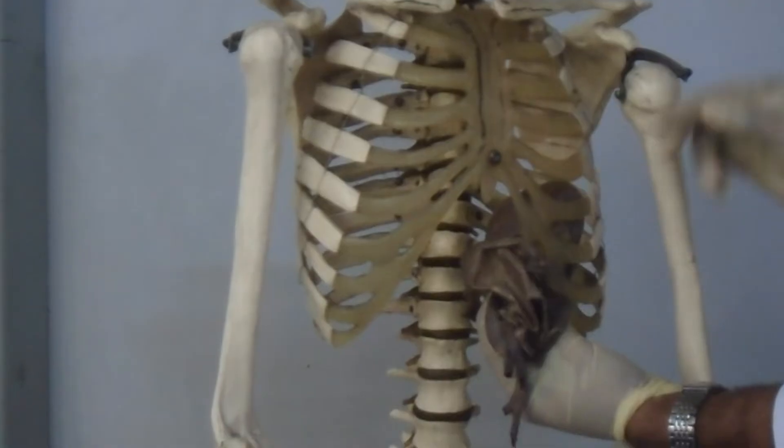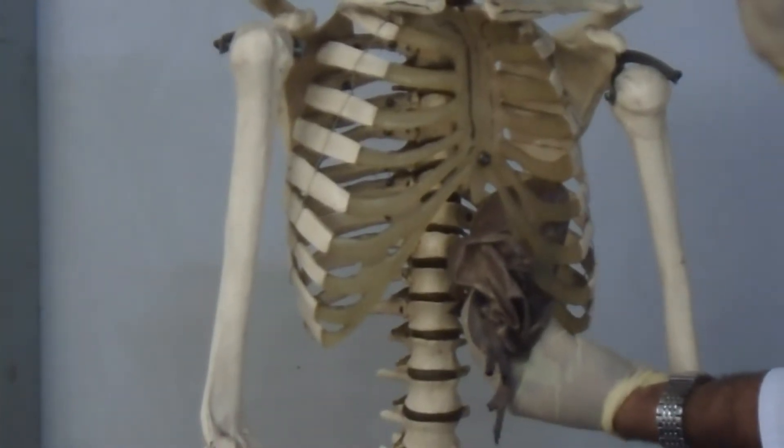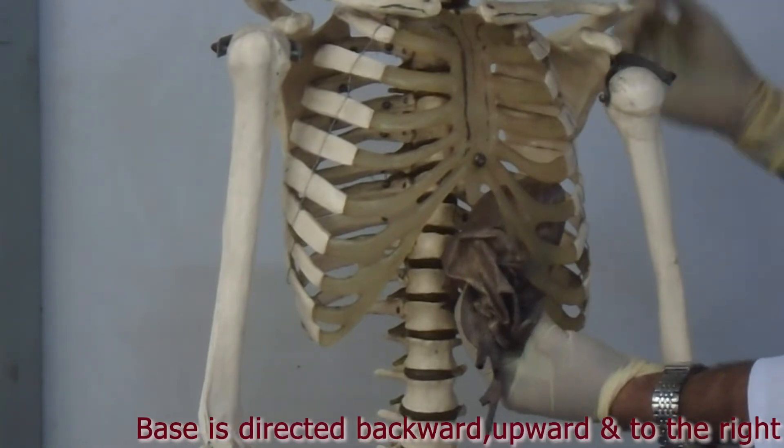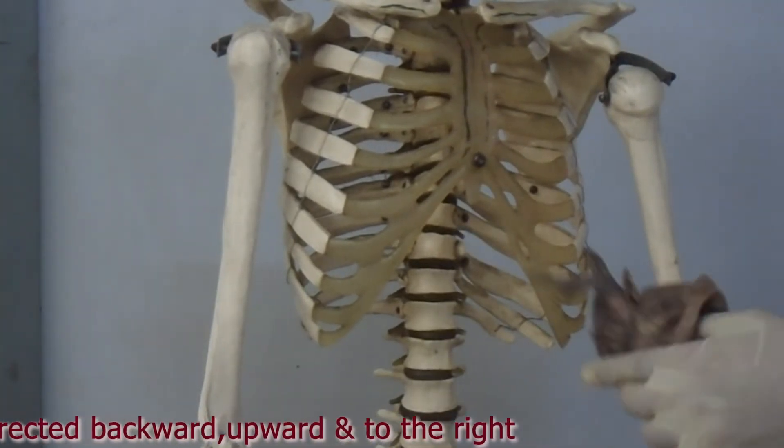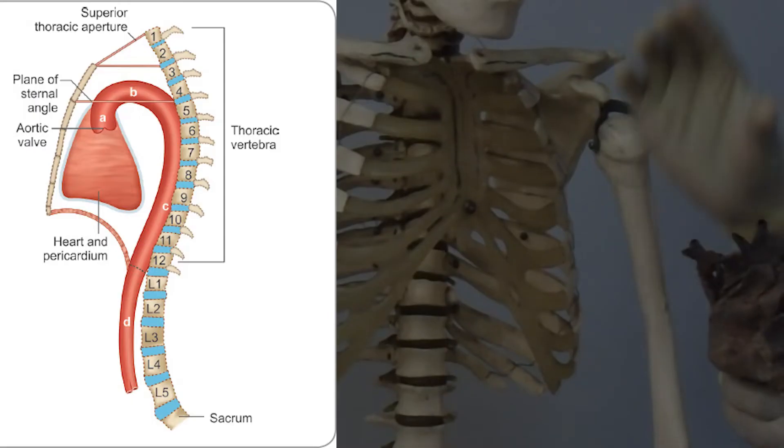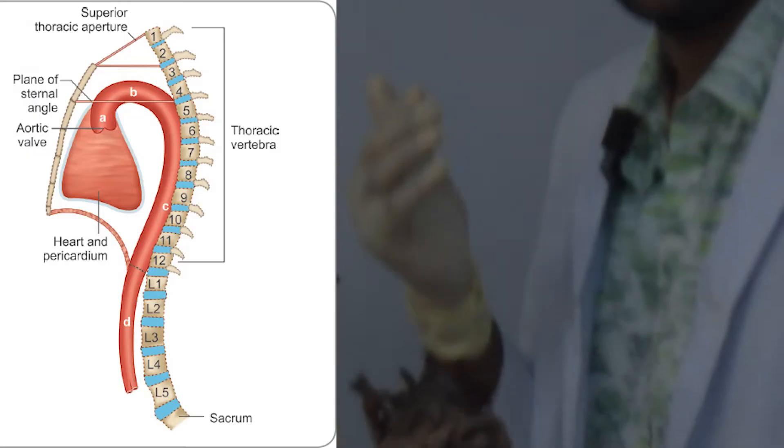Now let's discuss the basic anatomical points. The base is directed backwards, upwards, and to the right. The vertebral relation in the supine position